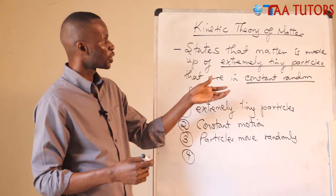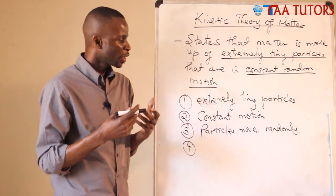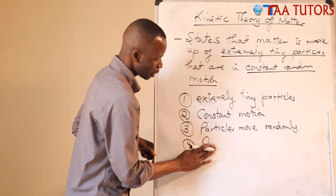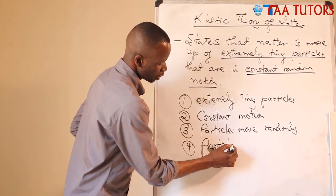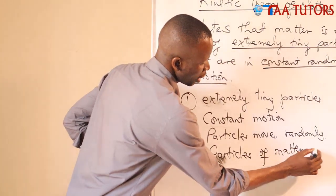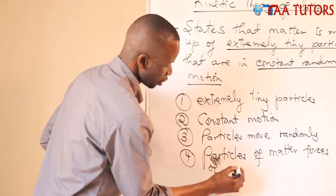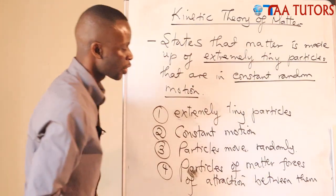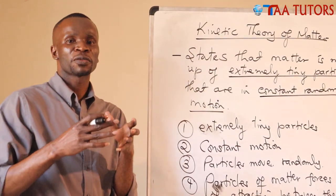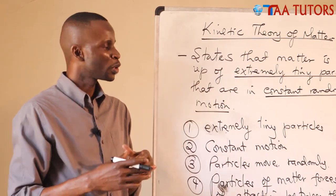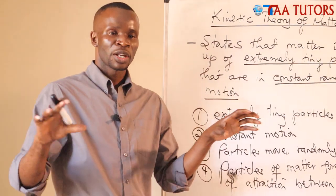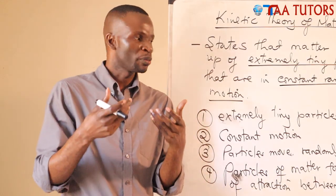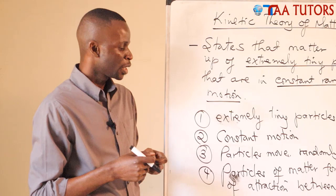Number four — not directly captured in the statement of kinetic theory of matter — is that particles of matter have forces of attraction between them. These particles are not 100% free. Some forces of attraction are weaker than others. For example, particles in air move much more freely, while solid particles are held by much stronger forces of attraction, pulling them so close together that they can only move by vibrating.